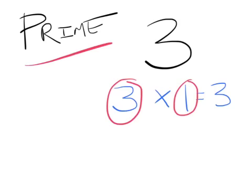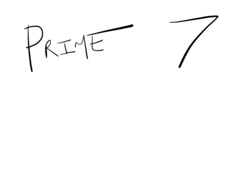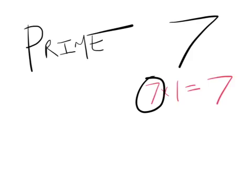Let's have another look at a prime number — let's look at the number seven. What are the factors of seven? To get to seven, you've got to times seven by one, and that's all you've got. Because the only factors of seven are itself and the number one, seven is a prime number.